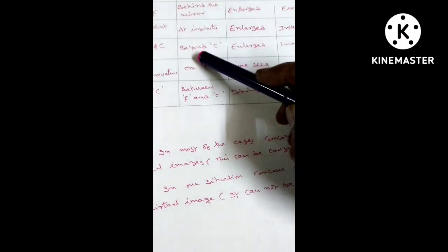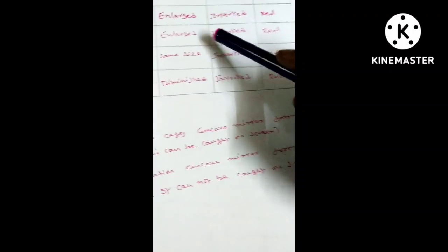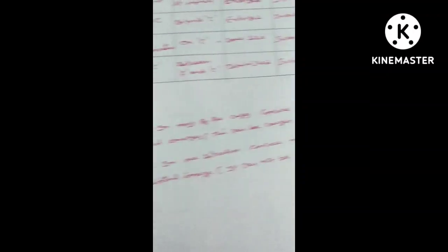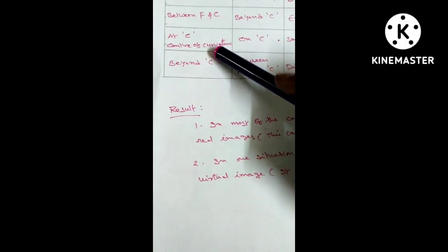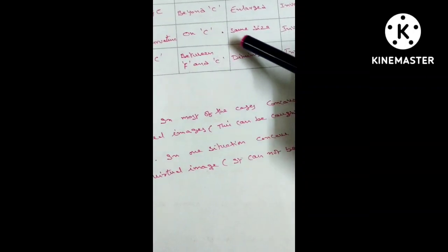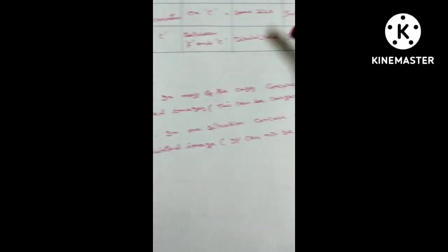Between F and C: Beyond C, enlarged, inverted, real. At C Center of curvature: on C, same size, inverted, real.